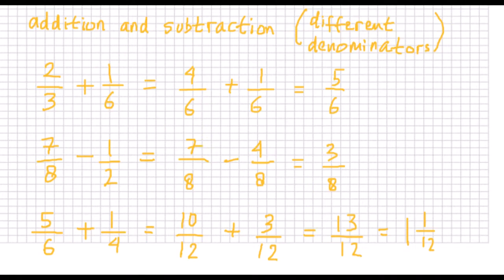To add or subtract fractions having different denominators, we need to rewrite the fractions so that they have the same denominator. For example, 2 over 3 plus 1 over 6: the common denominator is 6, so we rewrite the addition as 4 over 6 plus 1 over 6, which equals 5 over 6. And 7 over 8 minus 1 over 2: the common denominator is 8, so we rewrite the subtraction as 7 over 8 minus 4 over 8.